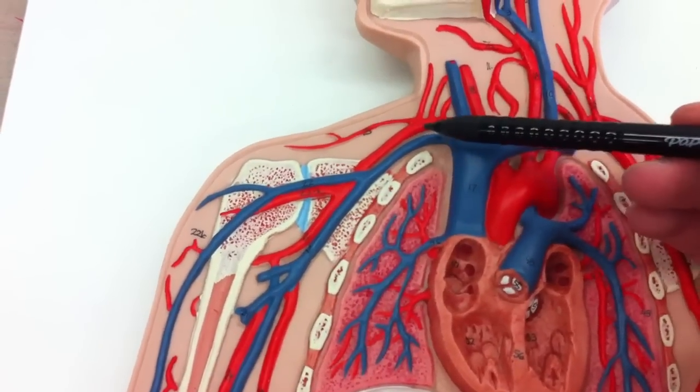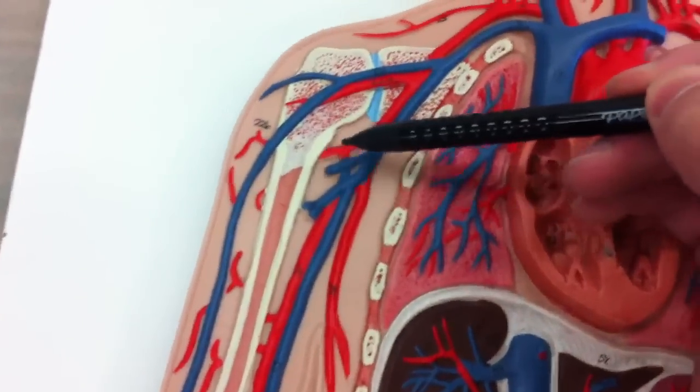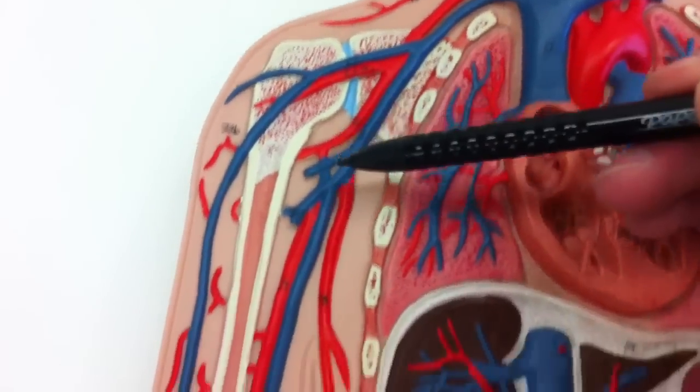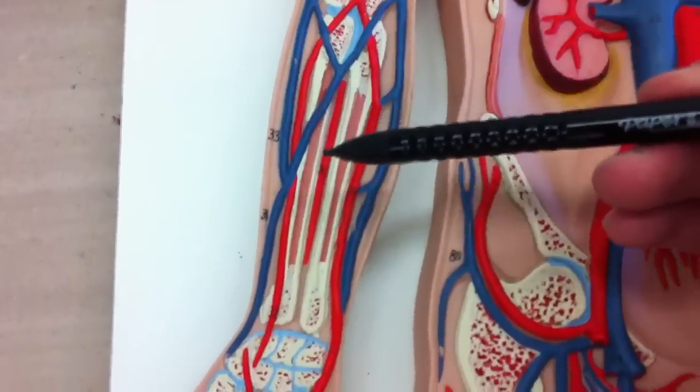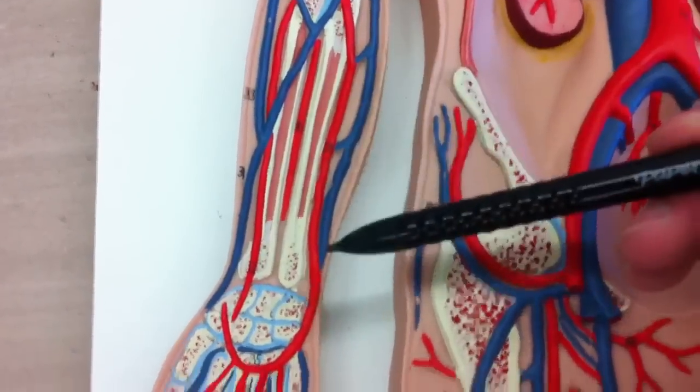If you follow the subclavian down, you'll have the axillary, which will be right here, and then the brachial artery, which comes down and splits off to the radial and the ulnar arteries.